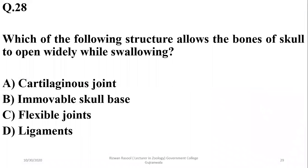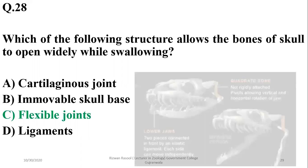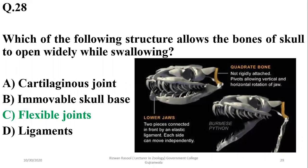Question twenty-seven: which structure allows the bones of the skull in snakes to open widely while swallowing? Snakes have flexible joints at the base of their skull, which allows wide opening of their mouths while swallowing large prey. The correct option is charlie.